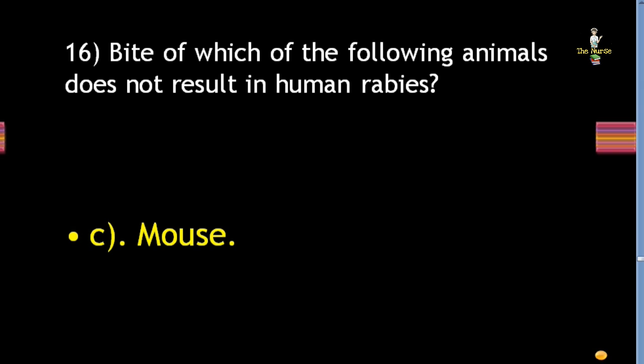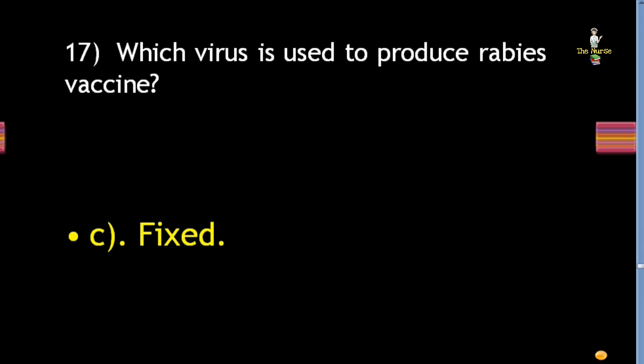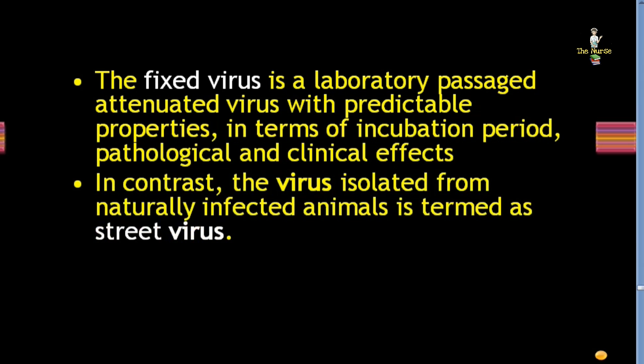Next question: which virus is used to produce rabies vaccine — wild, street, fixed, or live attenuated? Correct answer is fixed virus. The fixed virus is a laboratory-passaged attenuated virus with predictable properties in terms of incubation period and pathological and clinical effects. In contrast, the virus isolated from naturally infected animals is termed the street virus.